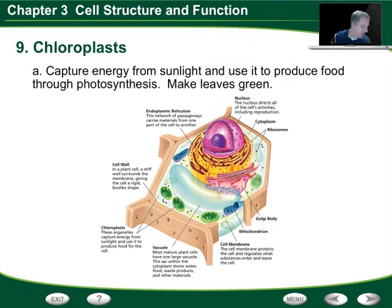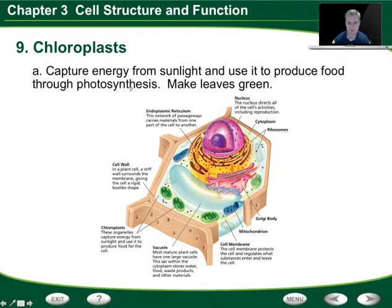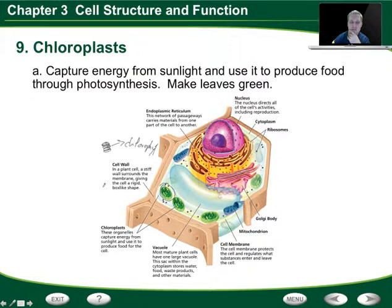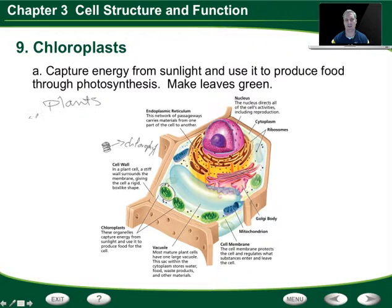Chloroplasts are an example of a structure found in plants but not in animals. Chloroplasts allow plants to capture energy from sunlight and use it to produce food through photosynthesis. Inside the chloroplasts you'd find little disks stacked on top of each other — those are chlorophyll. Chlorophyll are the actual structures that absorb the sun's ultraviolet light and energy and use it to make food through photosynthesis. Chloroplasts are really important and only found in plants.